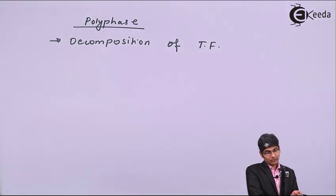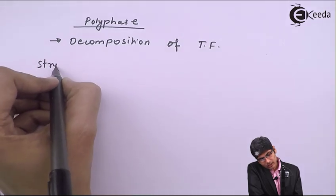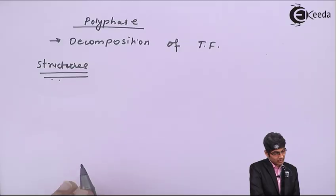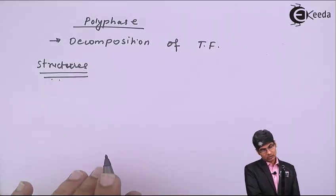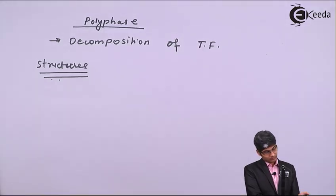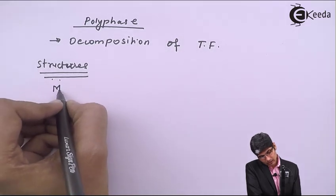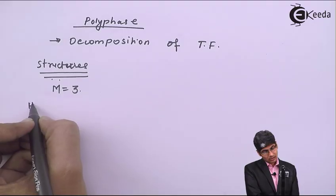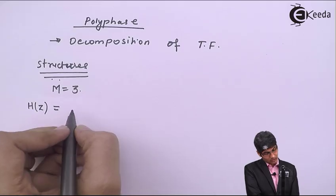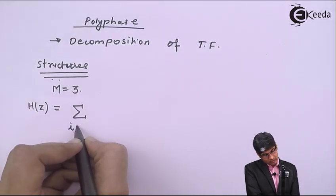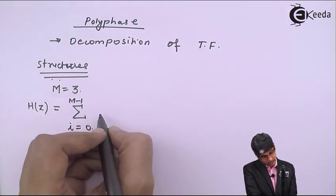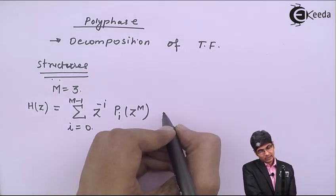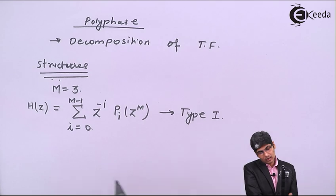Let us see how to draw a polyphase structure. There are basically two structures of polyphase. Let us take a third-order or three-level decomposition. The transfer function H(z) for Type 1 polyphase structure is written as: H(z) = summation for i going from 0 to M-1 of z raised to minus i, multiplied by Pi(z raised to M).